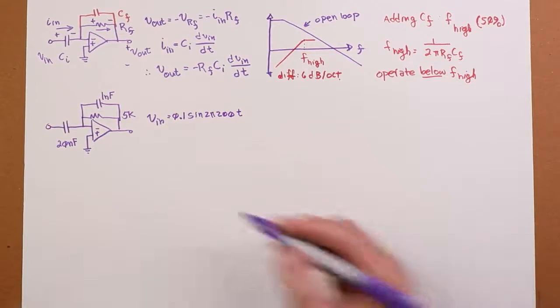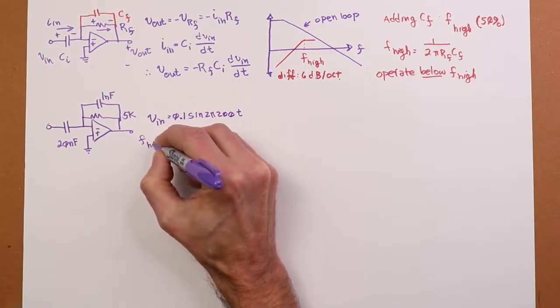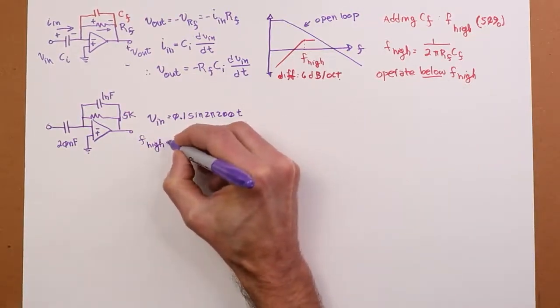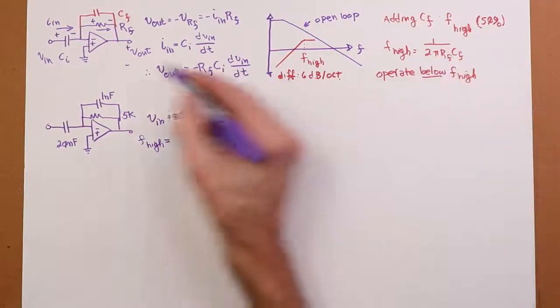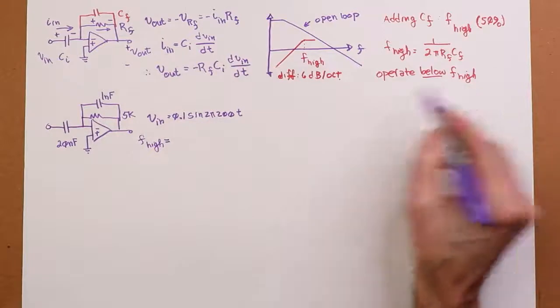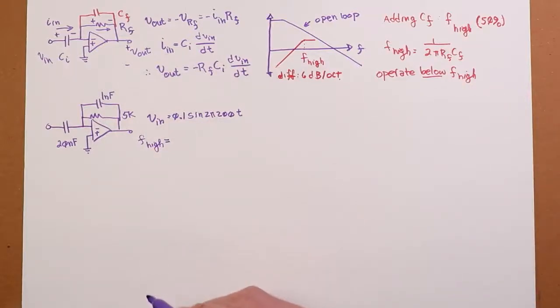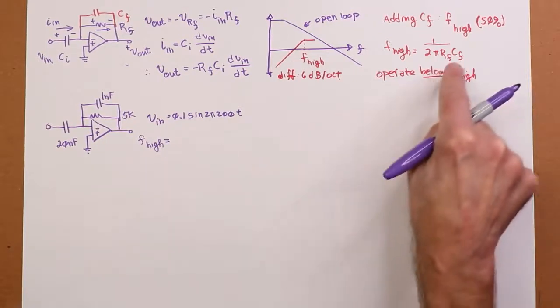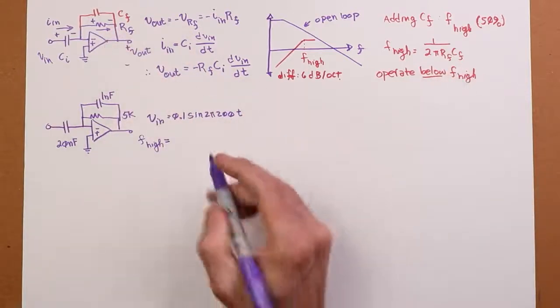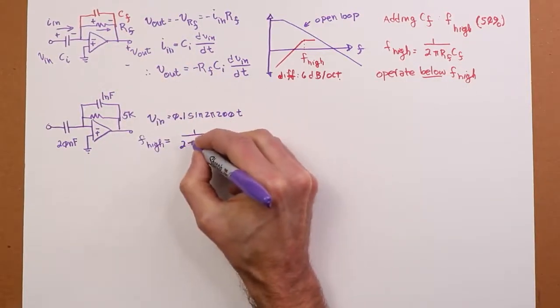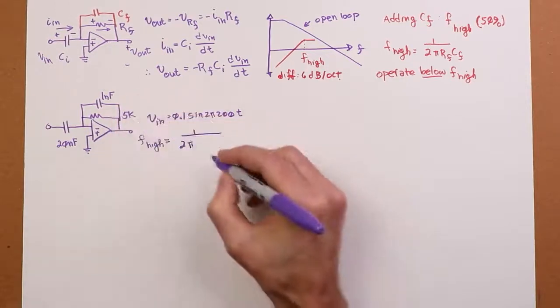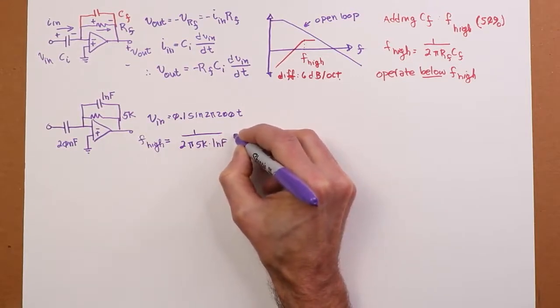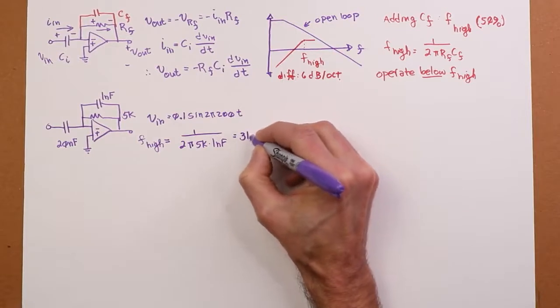So we've got 100 millivolts at 200 hertz. That's our sine wave input. The first thing we have to do is figure out what F_high is. We want to make sure we're well below that, ideally at least a decade. So F_high we know is 1 over 2π R_F C_F. So R_F and C_F are 5k and 1 nanofarad, and that works out to 31.8 kilohertz.